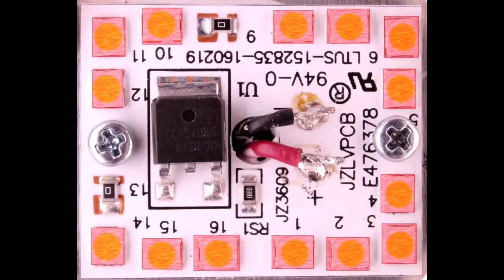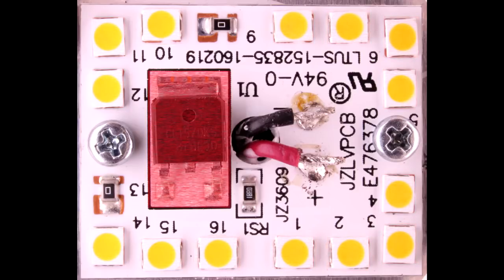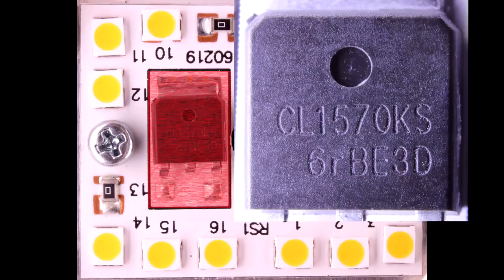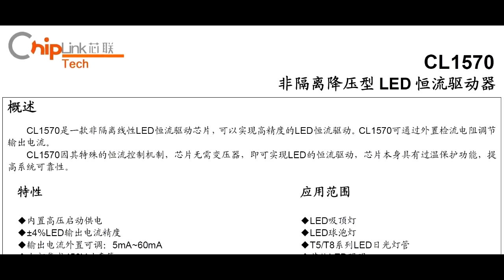So here's a view straight down of the emitter array. 16 LED placements as one might expect. That's not too unusual. What is quite different though, there appears to be a semiconductor on this assembly. If I zoom into it it's marked CL1570 and I can pull up a data sheet from a company called Chiplink Tech.